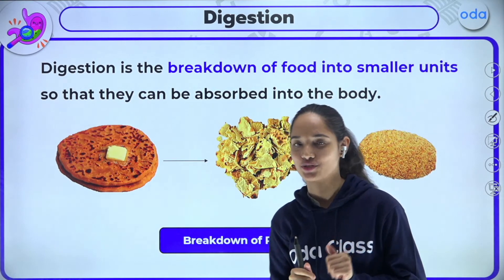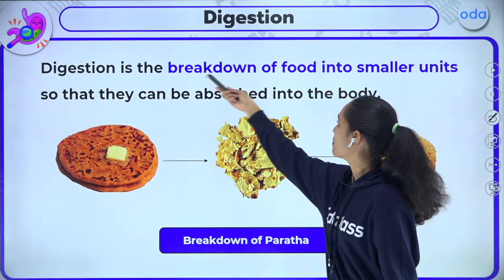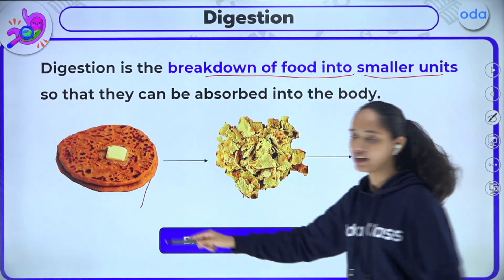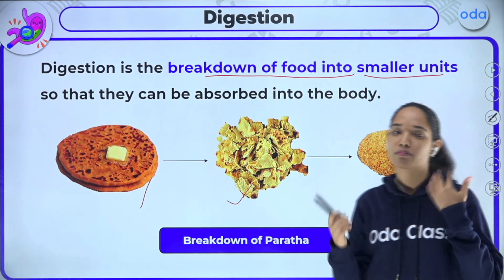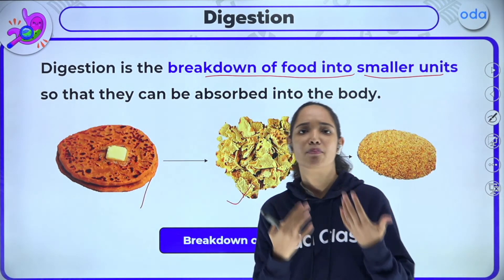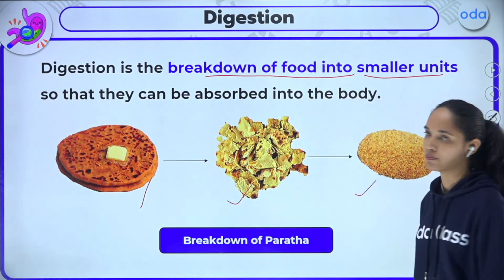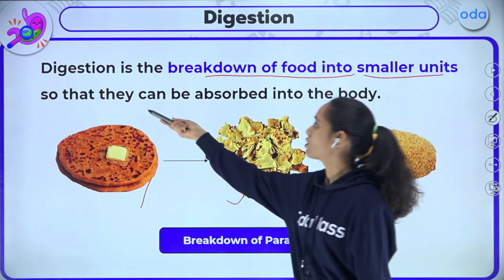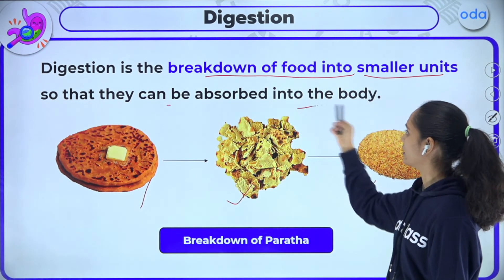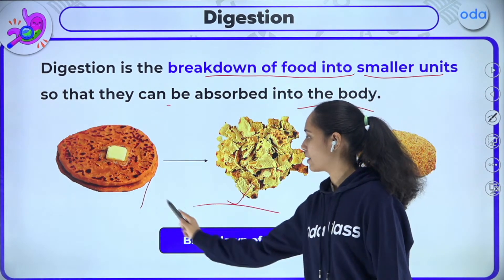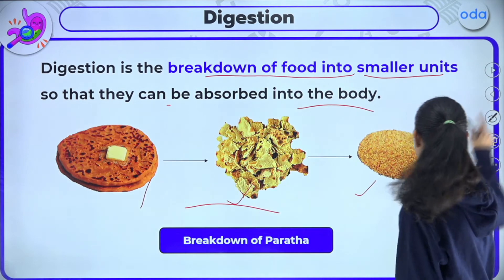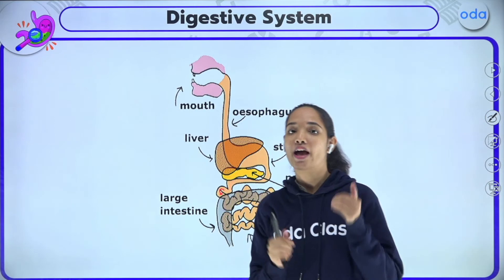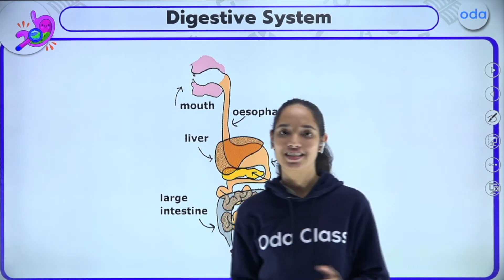Let us understand what is digestion. Digestion is the breakdown of food into smaller units. When you eat a paratha, you take a small bite, start grinding with the help of your teeth, and then it reaches the stomach. So basically, digestion is the breakdown of food so that nutrients can be absorbed in the body. For this digestion process, there must be a specific system — and that system is the digestive system.